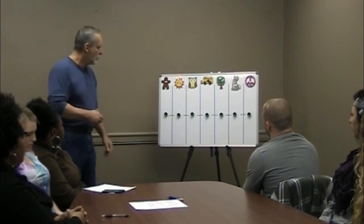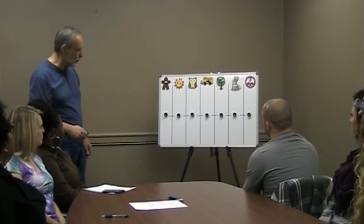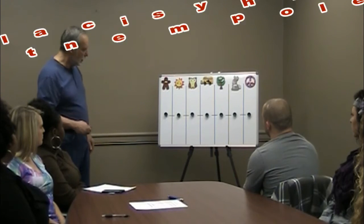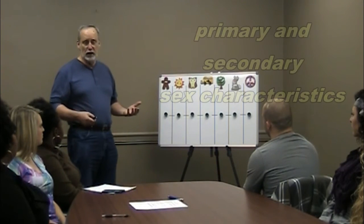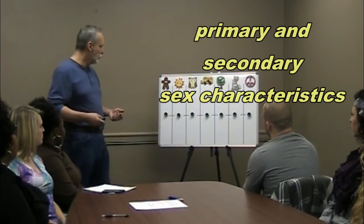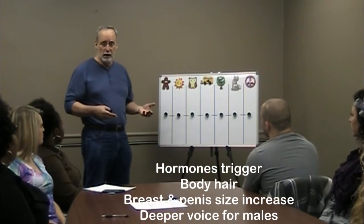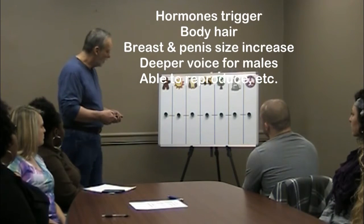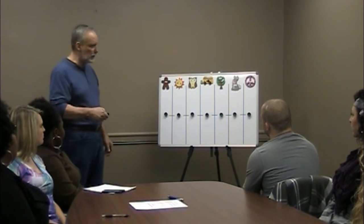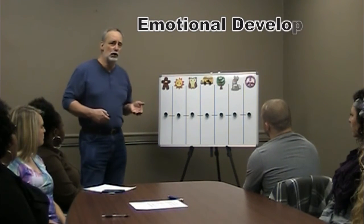On the board we have several different aspects of development that everybody goes through, starting with physical development. By physical development, we're talking about biology, reaching puberty, and all the physical changes that go along with that — and whether an adolescent is ahead or behind their peers and how they feel about that. We'll be covering that later.